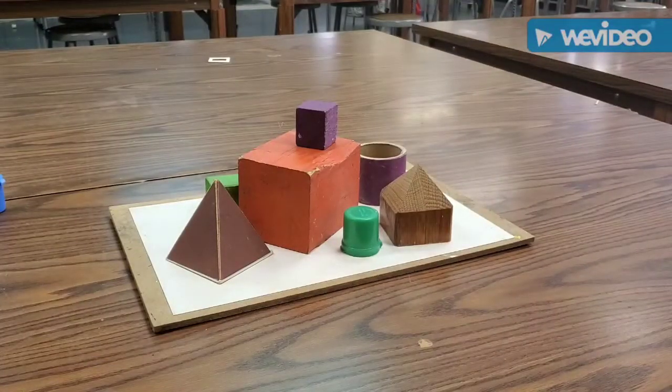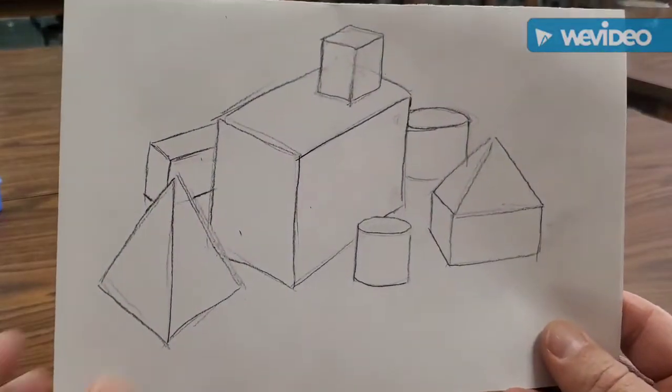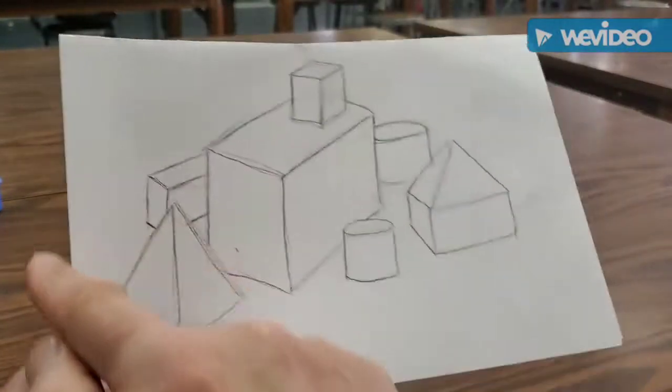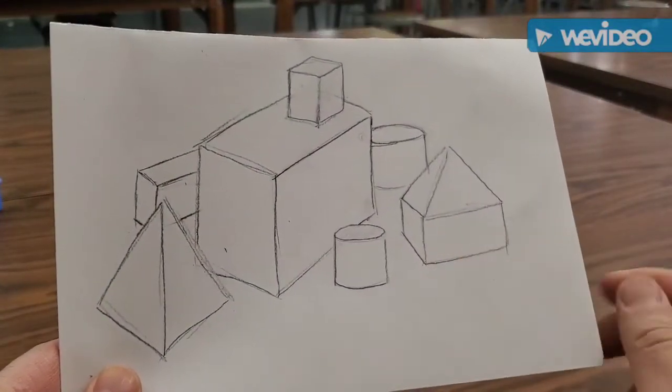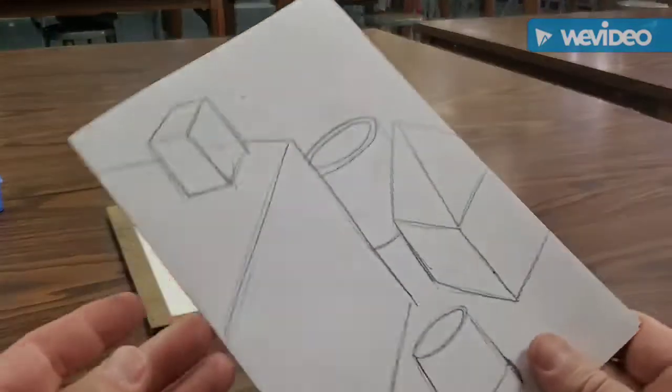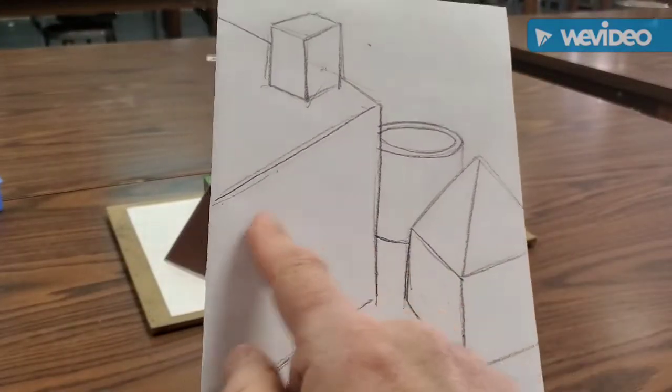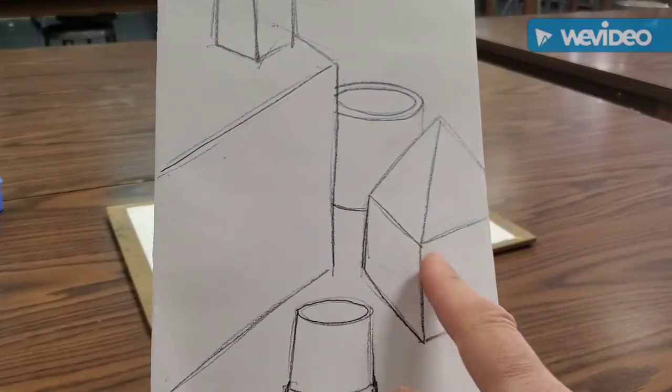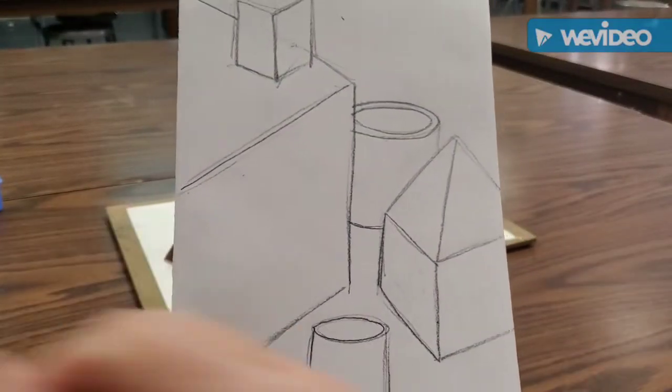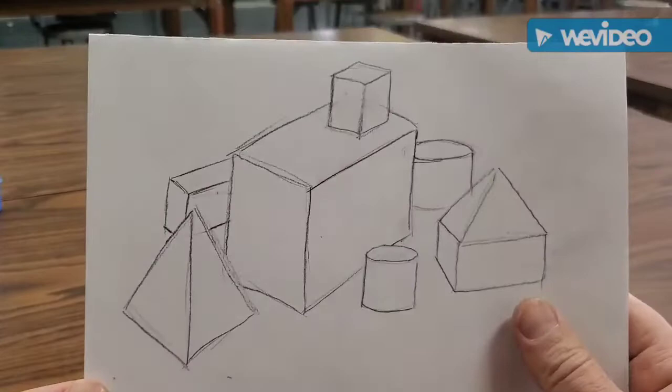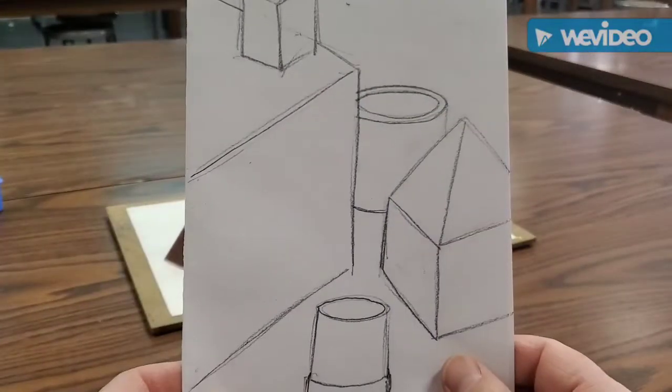Now, this is called a closed composition. The subject is closed within the borders of the page. Nothing is running off. This, on the other hand, is called an open composition. The subject is running off the sides of the page into the open spaces beyond the page. So, closed composition, open composition.